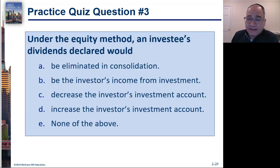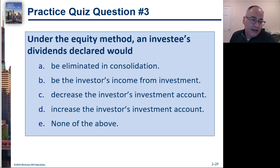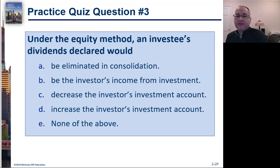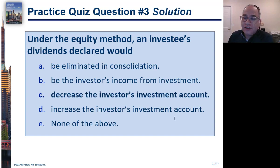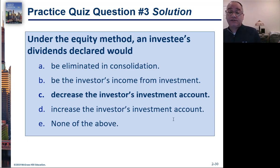That's something new — it used to be that once you had significant influence you were stuck with it, but the FASB has changed that. Practice question: under the equity method, investee dividends declared would be — A. Eliminated in consolidation, B. The investor's income from investment, C. Decrease the investor's investment account, D. Increase the investor's investment account. The answer is C — decrease the investor's investment account — because the journal entry is to debit cash or dividends receivable and credit the investment account for your share of the dividends.